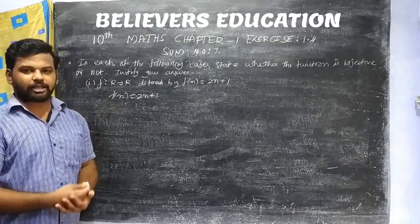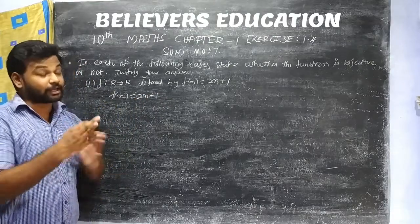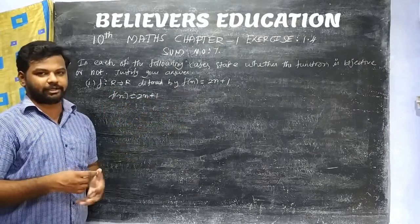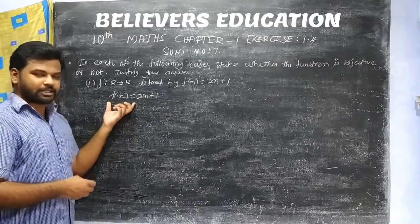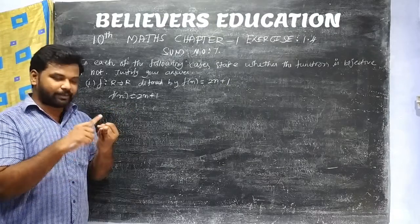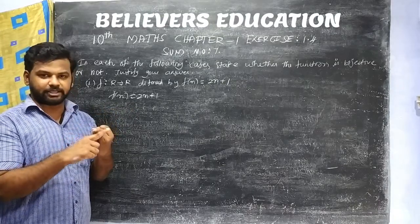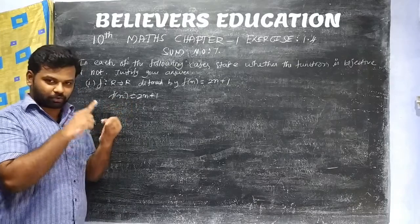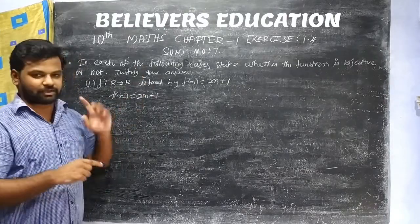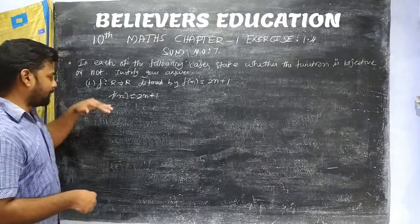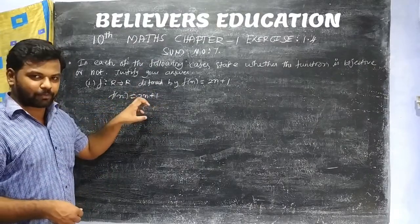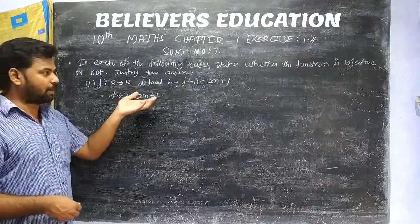How easy is it to identify a bijective function? A bijective function must satisfy one-to-one and onto conditions. If we have a one-to-one function, that is a bijective function.